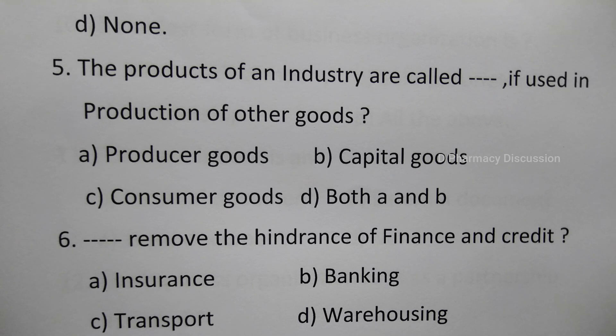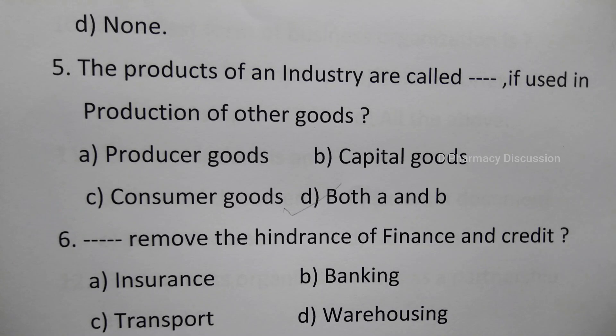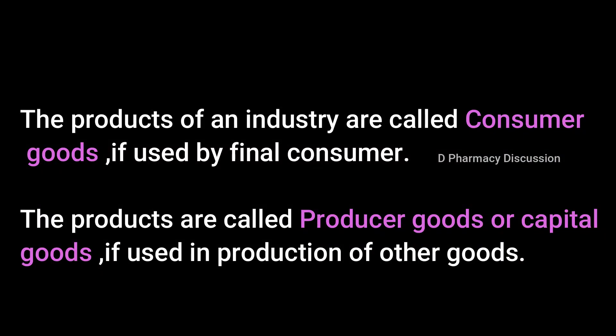Question 5: The products of an industry are called what if used in production of other goods? Option A: producer goods, B: capital goods, C: consumer goods, D: both A and B. The correct answer is option D, both A and B. Products are called consumer goods if used by the final consumer, and called producer goods or capital goods if used in production of other goods.